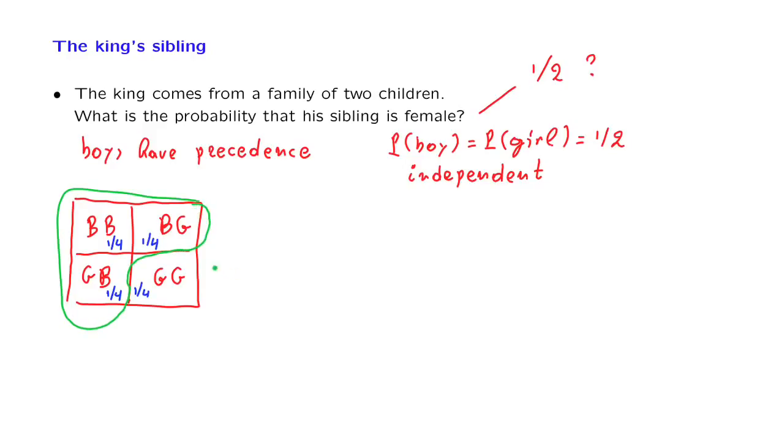Our new universe is this green universe, which includes all outcomes that have at least one boy, so that we can get a king. We should, therefore, use the conditional probabilities that are appropriate to this new universe.